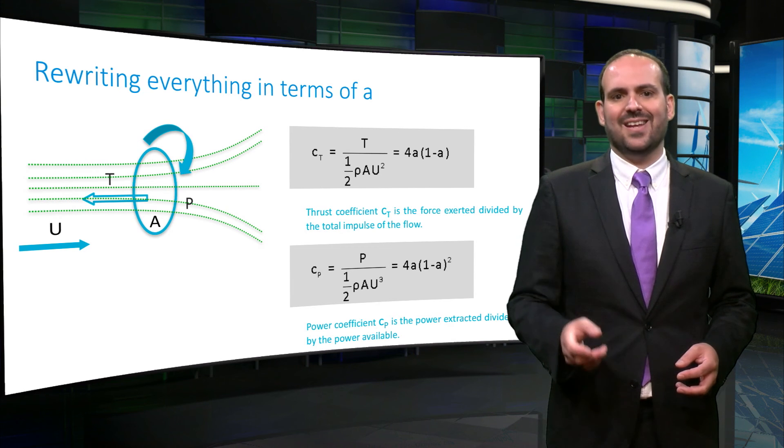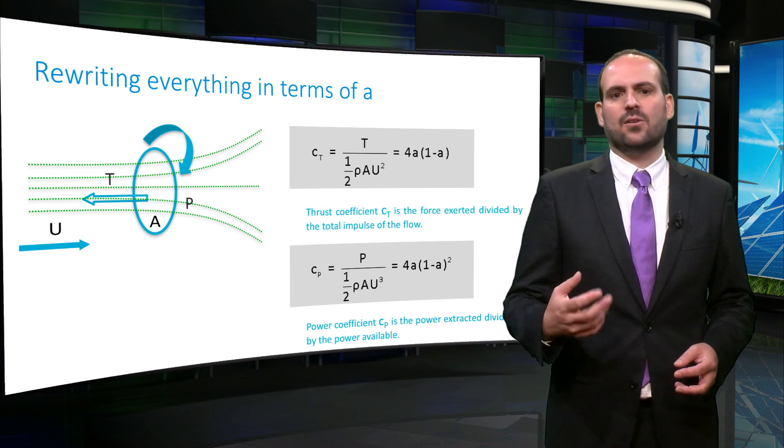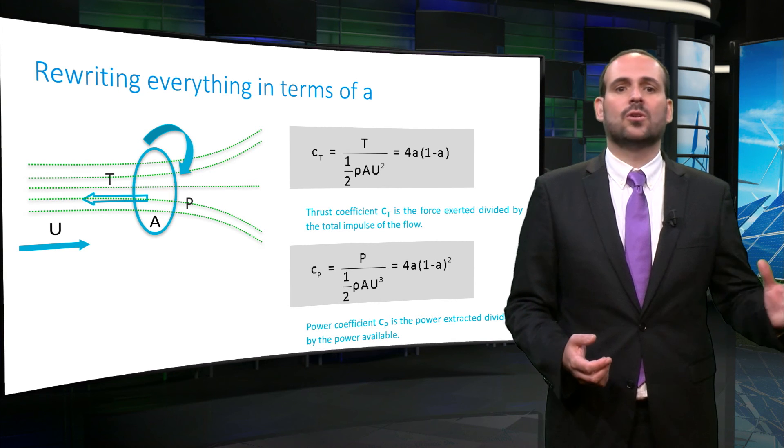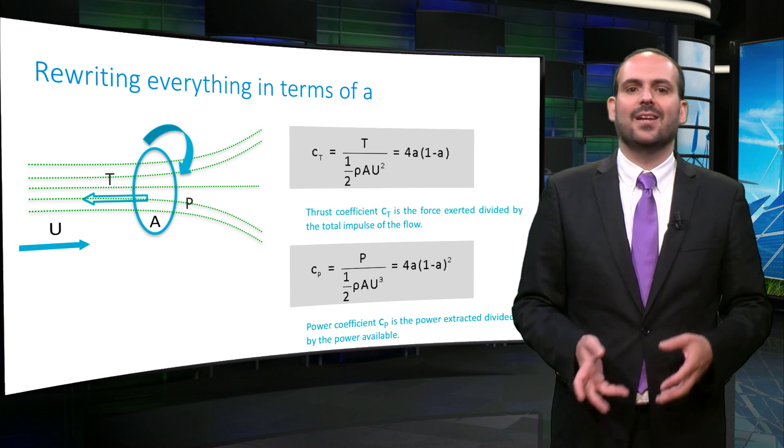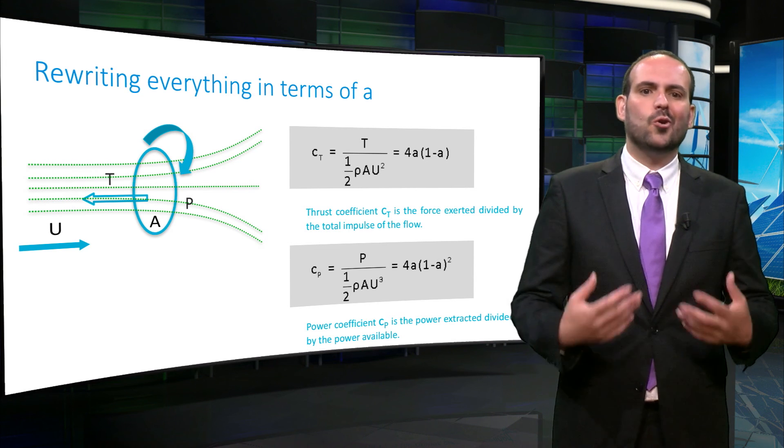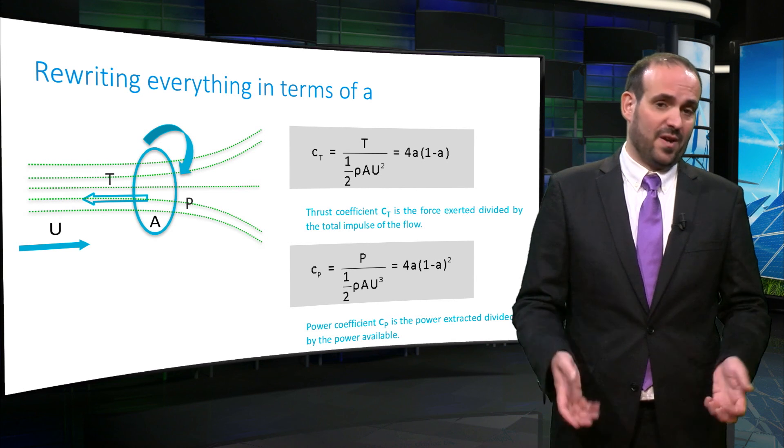The thrust coefficient CT is the force exerted by the turbine divided by the total impulse of the flow. Whereas the power coefficient CP is the power extracted by the turbine divided by the total power that the flow could have provided.